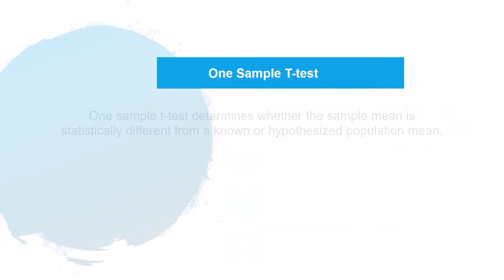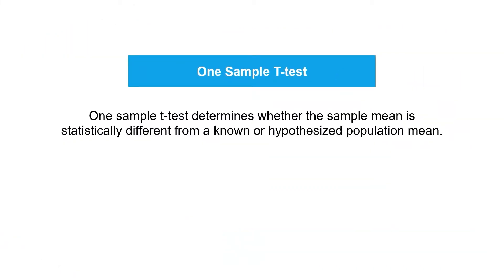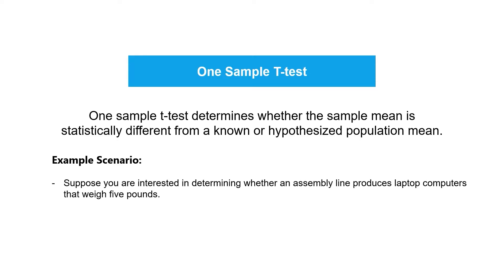Let's first discuss the one-sample t-test. This test determines whether the sample mean is statistically different from a known or hypothesized population mean. Example scenarios where you can use this test include: determining whether an assembly line produces laptop computers that weigh 5 pounds, and checking if the average height of male Filipinos is 160 centimeters. Notice that in each scenario, there is a hypothetical value — 5 pounds and 162 centimeters respectively.